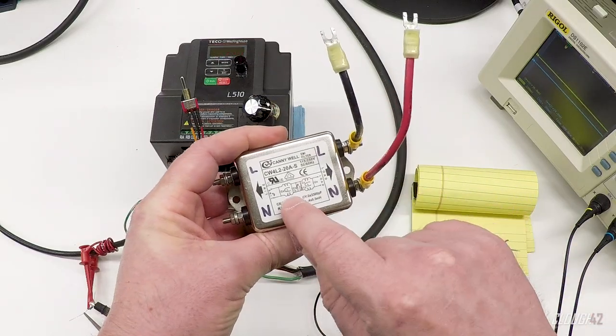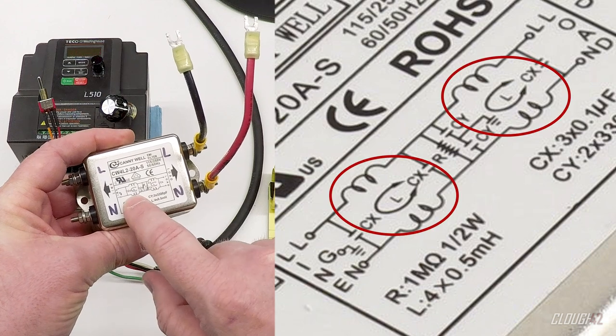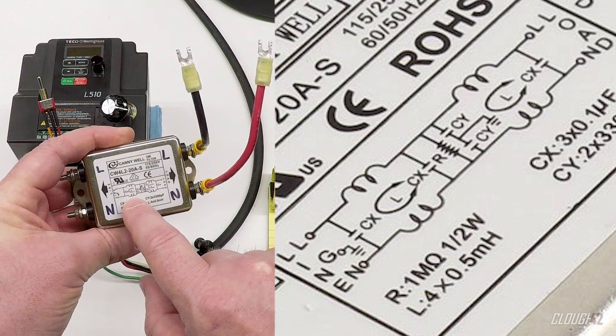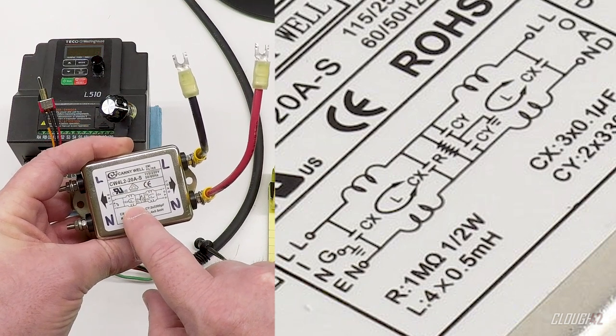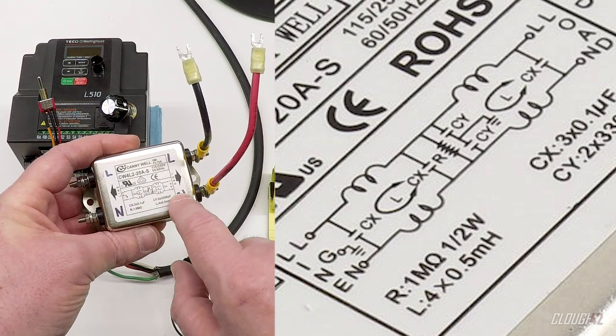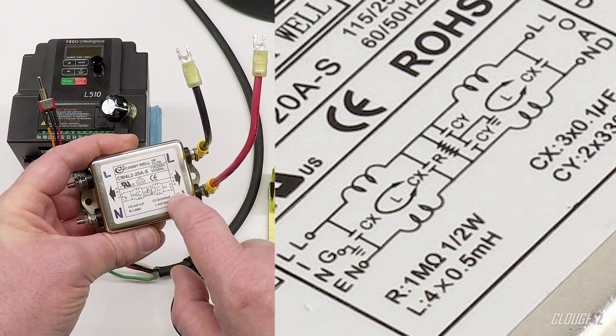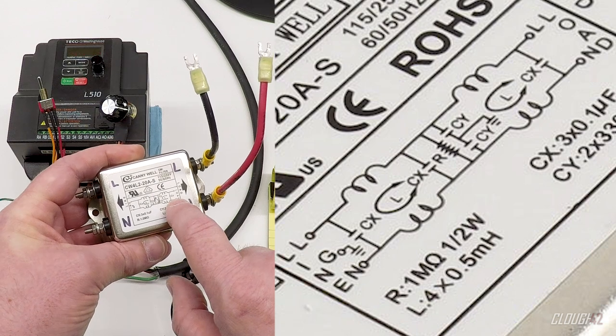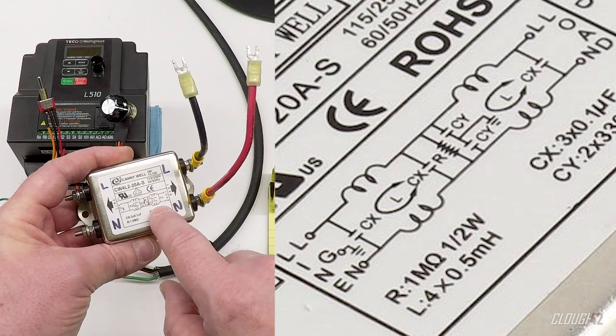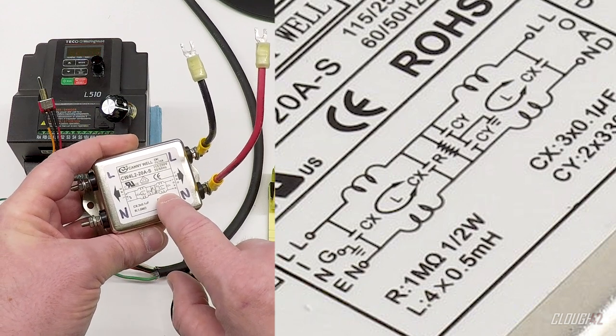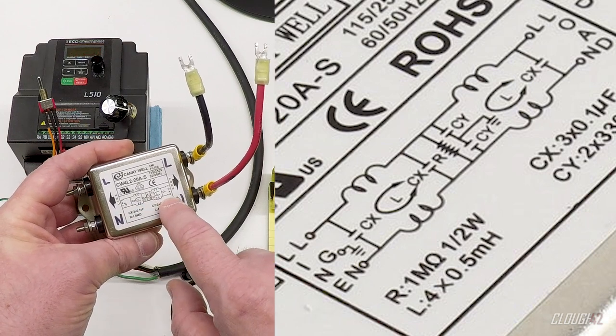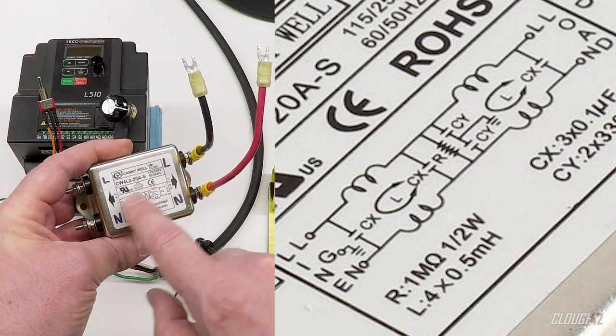So it's got inputs for line and neutral. It's balanced, so it doesn't matter which side you put the line and neutral on. But I went ahead and labeled them how I'm going to hook it up just so that I don't get confused later. Now, what's actually in this box are a couple of common mode transformers or common mode chokes that the line and the neutral both go through. And what's happening here is when you have an inductor, it has higher impedance for higher frequencies.